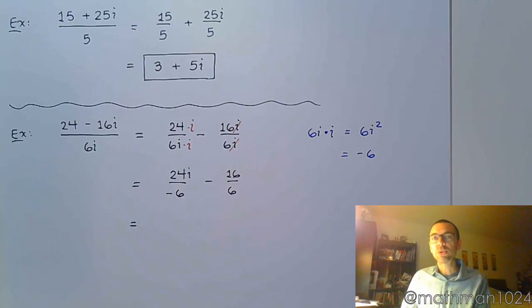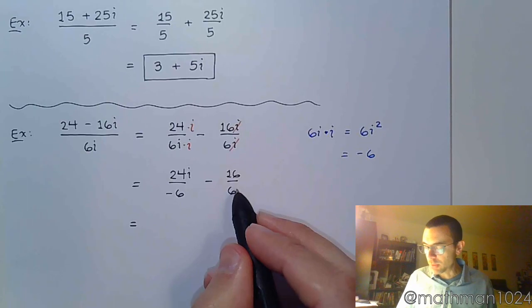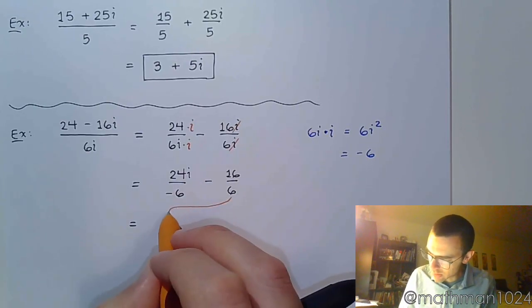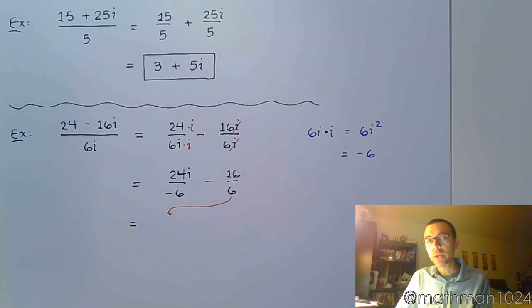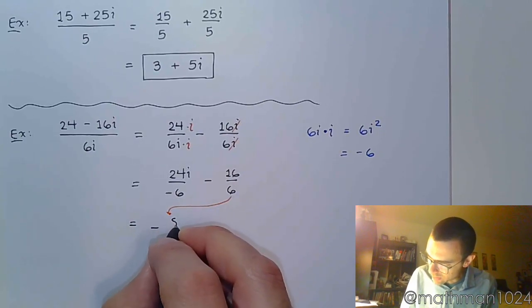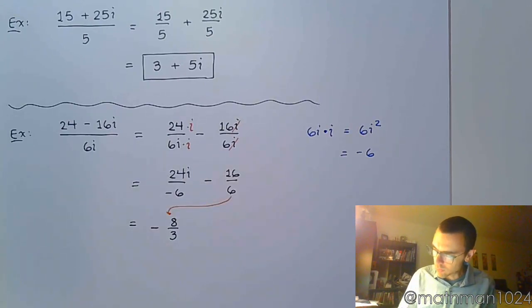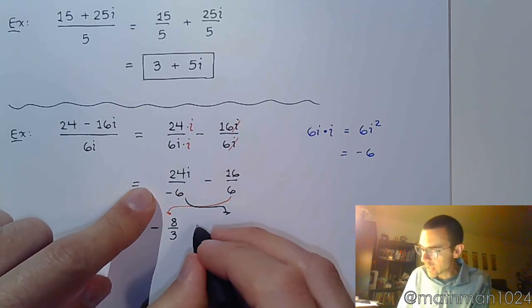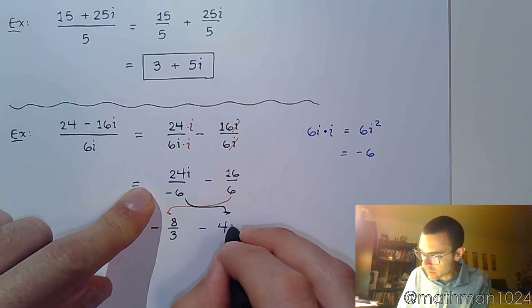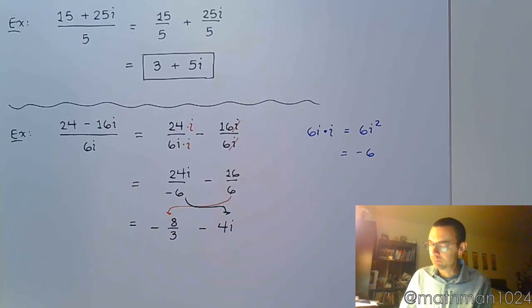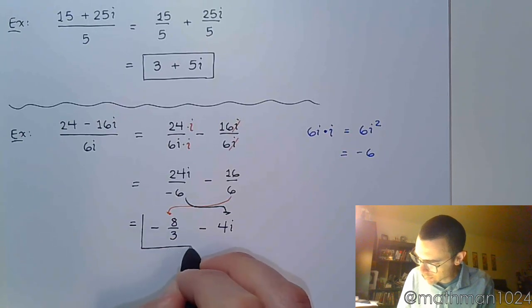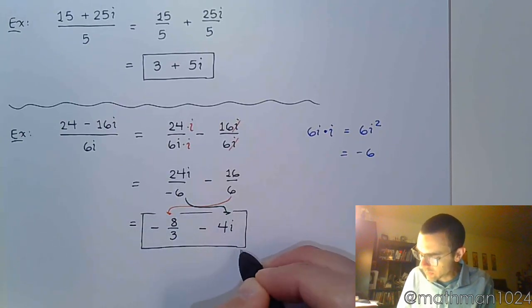Now, keep in mind that we're supposed to write our answers real part first. So, this is my real part. So, I'm going to write this one in the front, and I'm going to simplify. So, negative 16 over 6, there's a common factor in both the numerator and denominator of 2. So, this becomes negative 8 thirds. And then here, this piece is going to go here. 24 over negative 6 is minus 4, and then you've got the i. And there you have it.